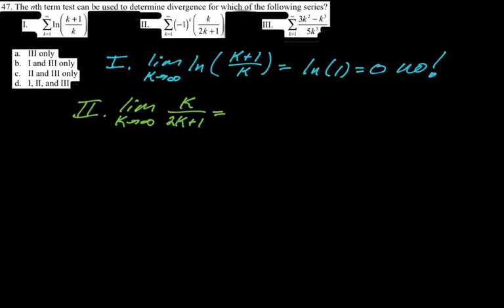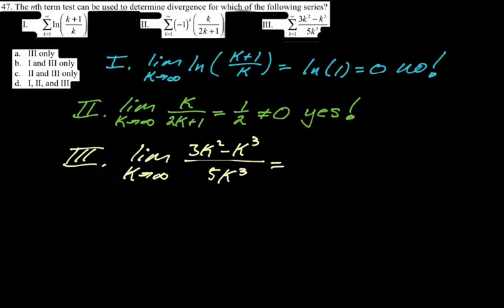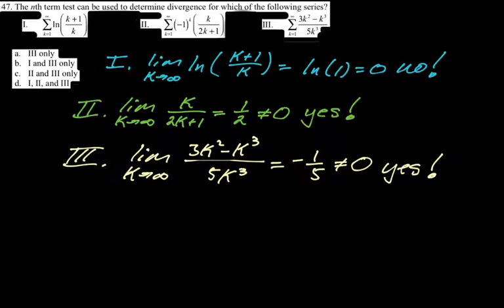For option two, the limit as k→∞ of k/(2k+1) is one-half, which is not zero, so by the nth term test this diverges. I'm ignoring the (-1)^k because if the limit of the absolute value is not zero, then the alternating limit will also not be zero. For option three, the limit gives -1/5, which is not zero, so the nth term test tells us this also diverges. The answer is two and three.